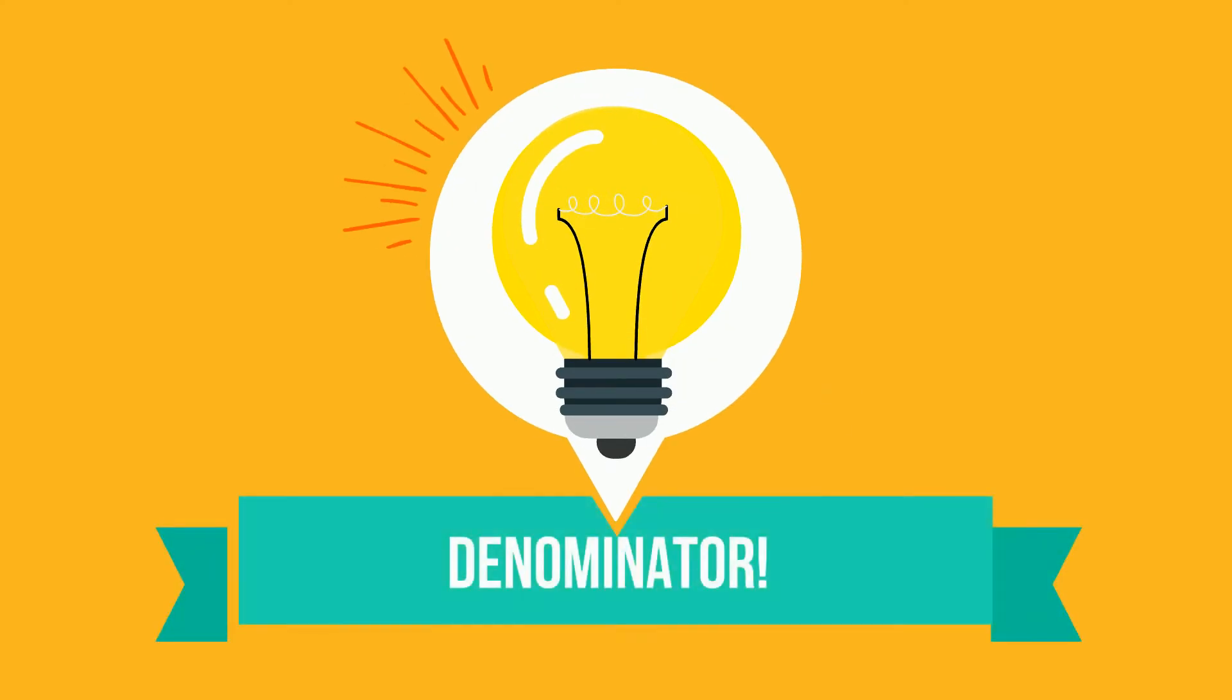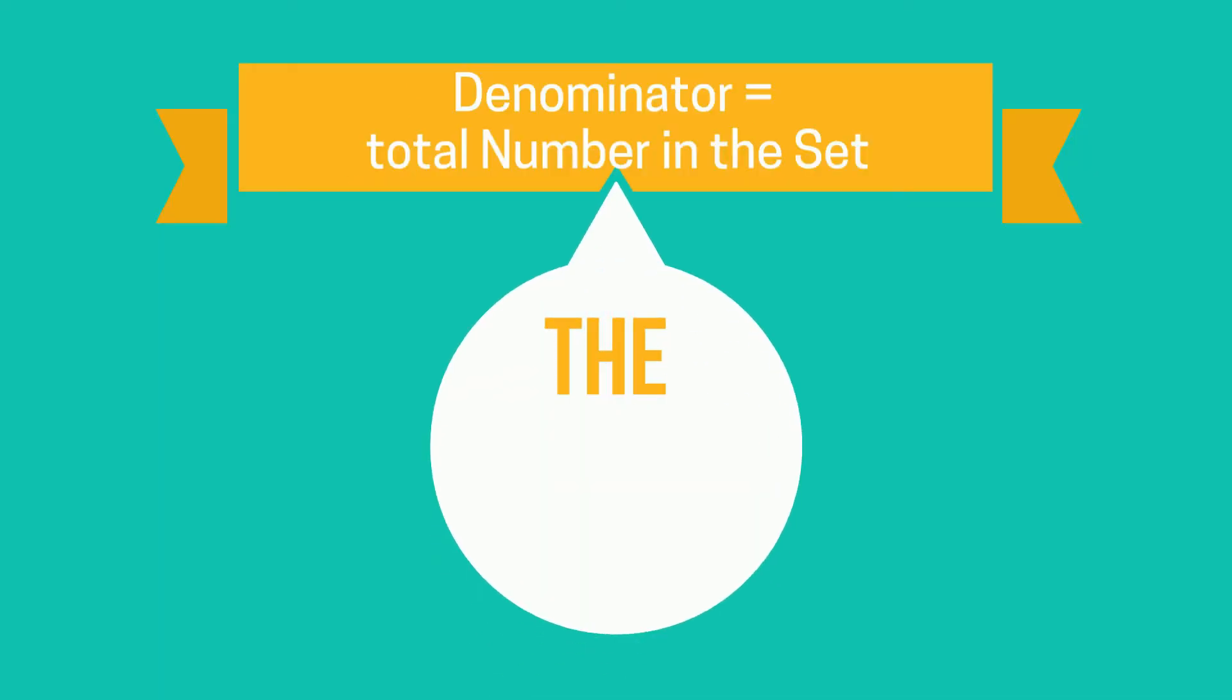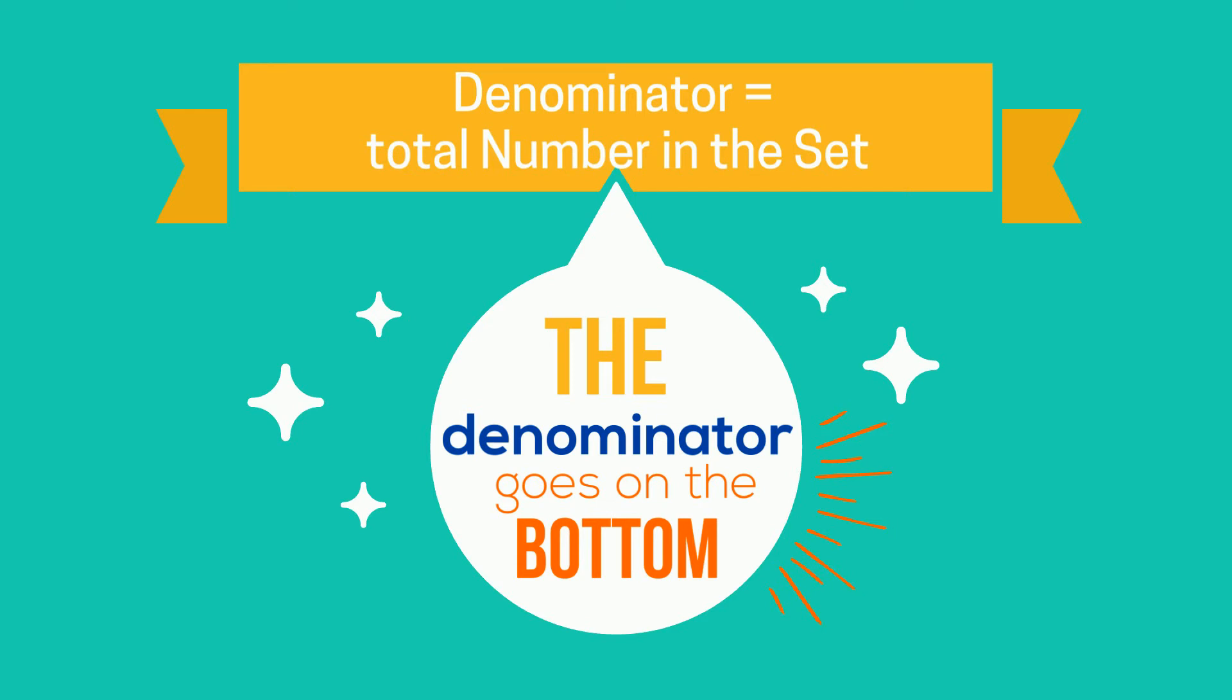The number of apples in the set is the denominator. The denominator tells us the total number of objects in the set, and the denominator goes on the bottom of the fraction.